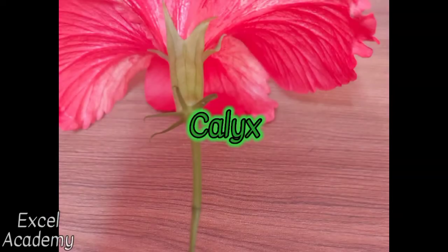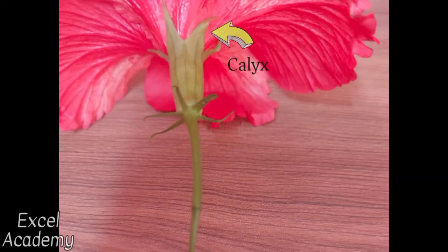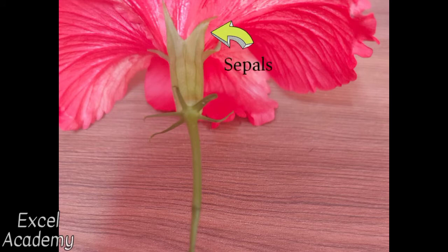Calyx. The calyx is the outermost whorl of a flower which is green in color. It protects the flower in its bud stage, prevents it from drying out, and also helps in photosynthesis. The calyx is also known as sepals.